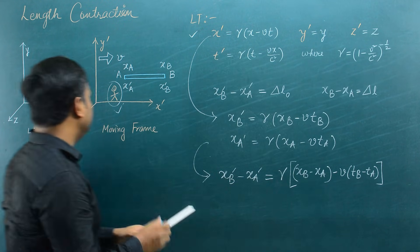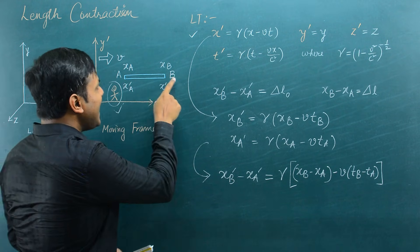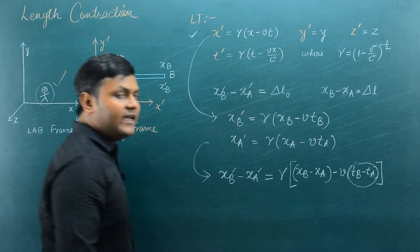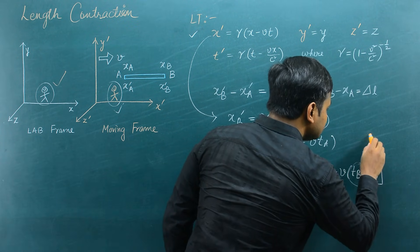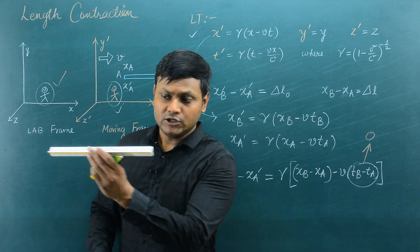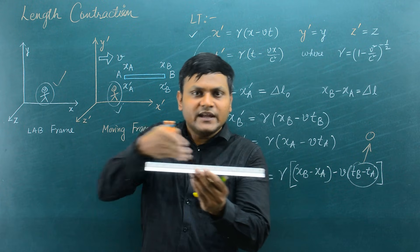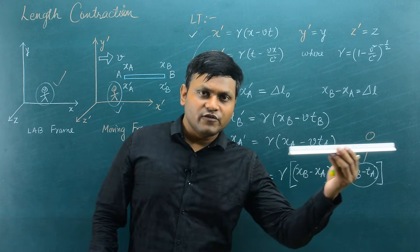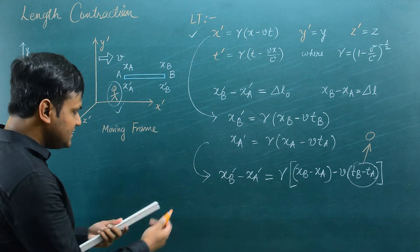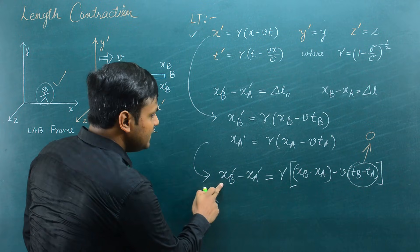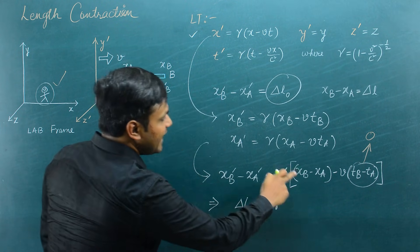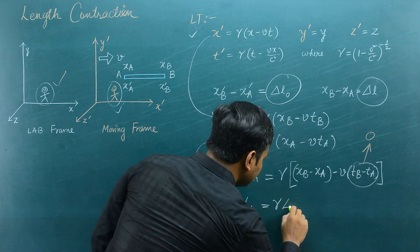This observer must measure endpoints A and B at the same instant as the rod is moving, which simply means that T_B and T_A must be the same — that is, T_B − T_A = 0. This is simply the idea that if you want to measure the length of a moving object, you must measure both endpoints at the same instant. So if T_B − T_A = 0, then I simply end up getting: X_B' − X_A' = γ(X_B − X_A), which means ΔL₀ = γ · ΔL.